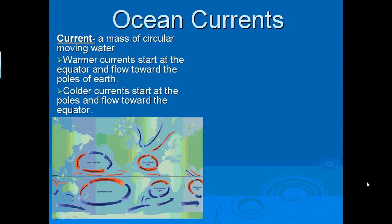Ocean currents. Currents are a mass of circular moving water. If you look in the picture below, you'll see that each one of those currents is a circular movement. Warm currents start at the equator because they're getting more direct sunlight and flow towards the poles of earth. Cold currents start at the poles of earth and flow towards the equator.